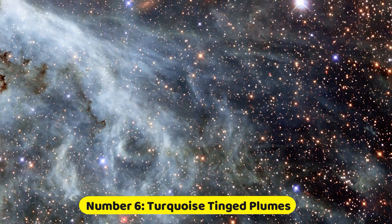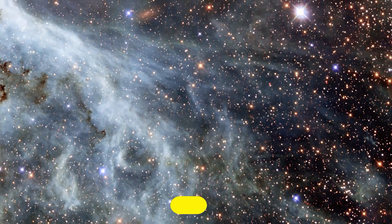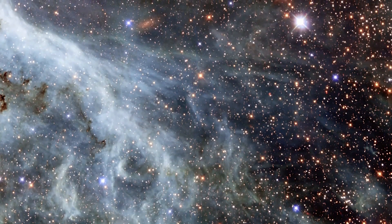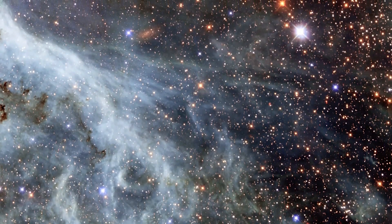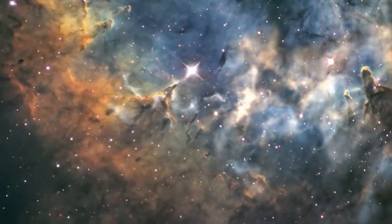Number 6. Turquoise-Tinged Plumes. The photograph showcases the outer reaches of the Tarantula Nebula situated within the Large Magellanic Cloud. However, this is not an actual ocean.